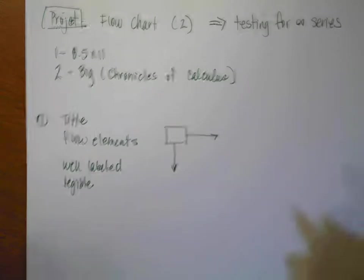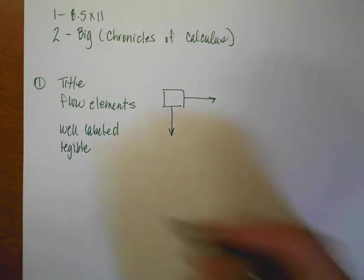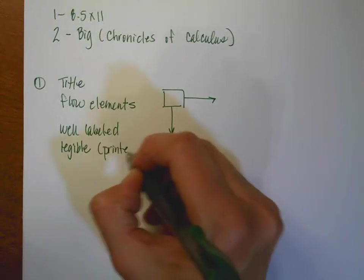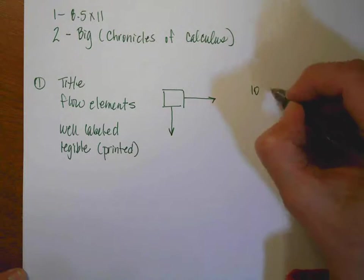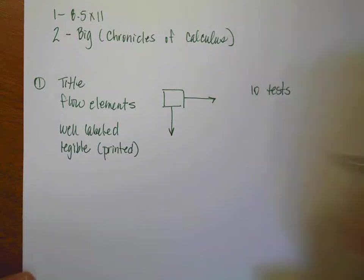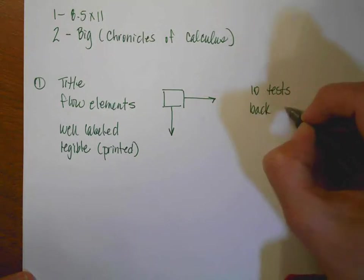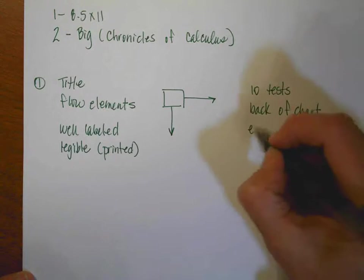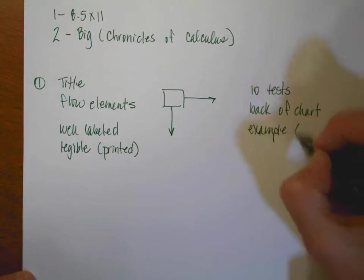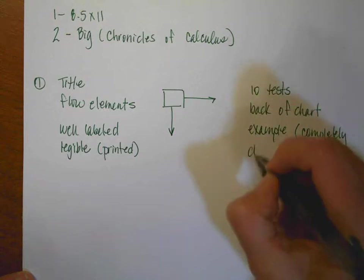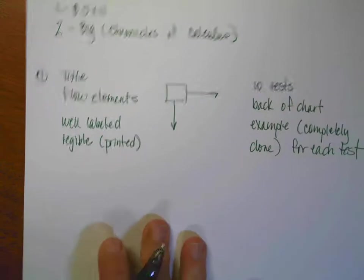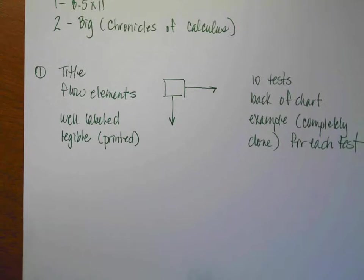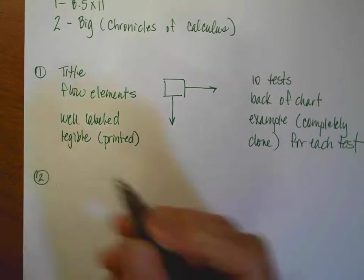It has to be legible — for some of you that's going to be an entertaining issue. My preference would be that it is printed and not cursive, just because some of you, your printing is bad enough as it is. You need to include all 10 of our tests, and then on the back of your flow chart you're going to include an example completely done for each test. So that's going to be what our little one is, and then we will compare these, talk about pros and cons, and then come up with one that we choose.